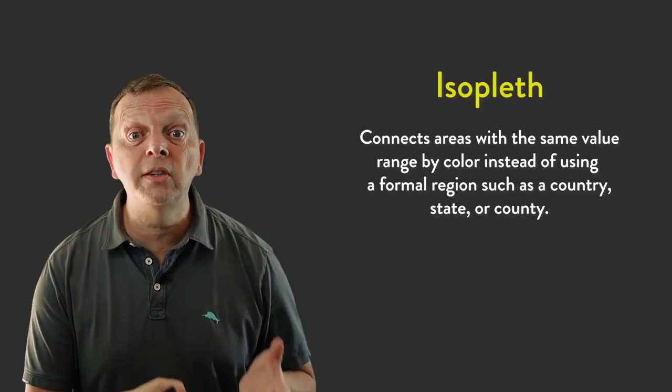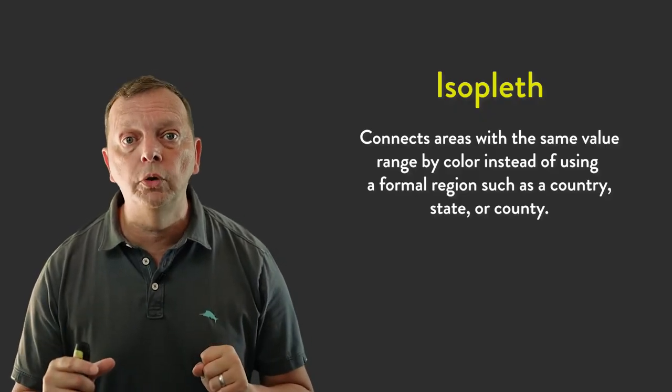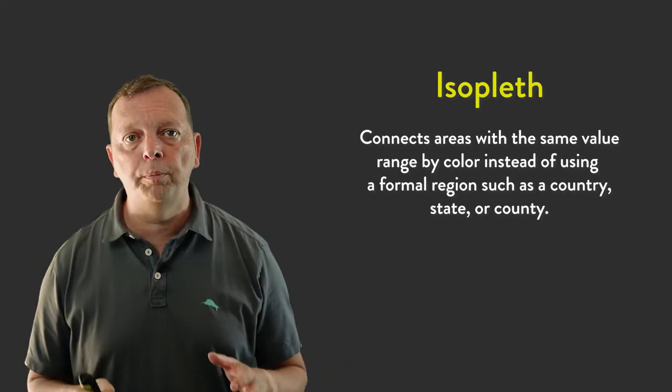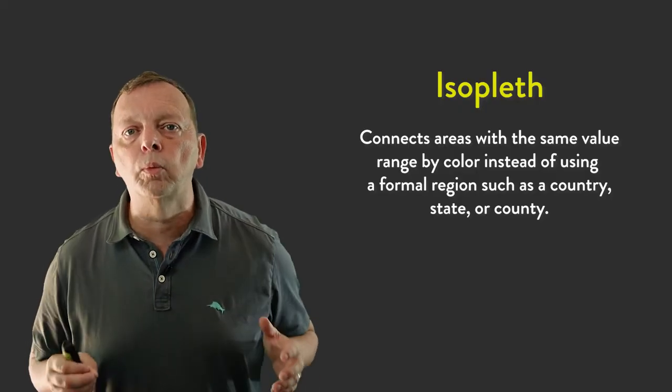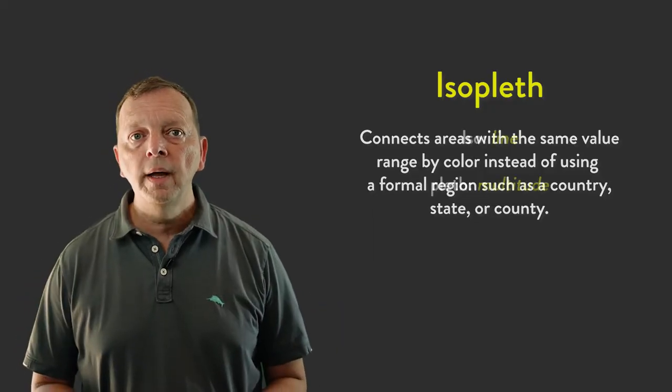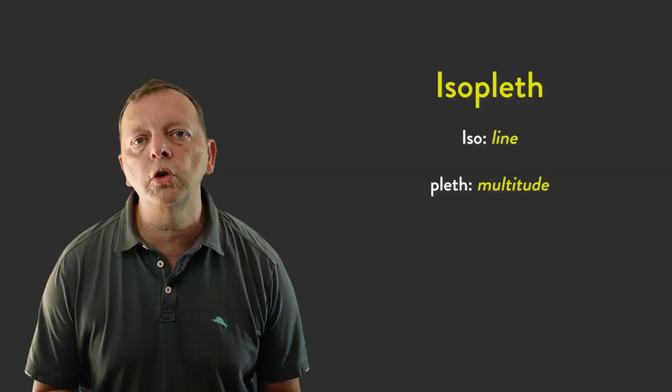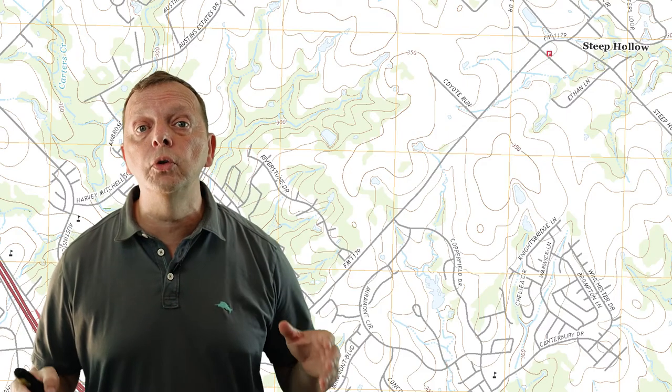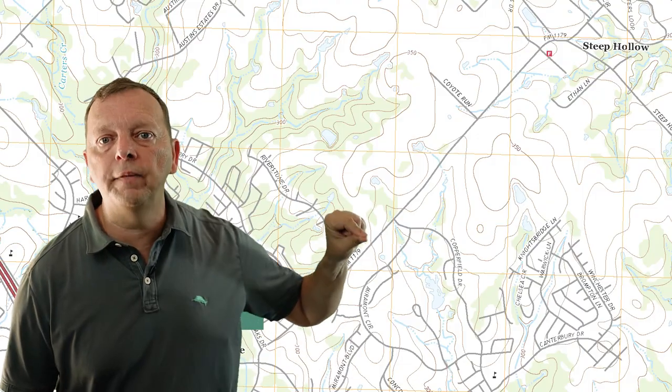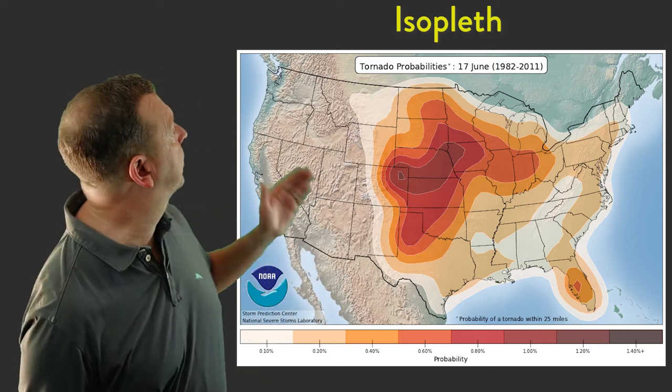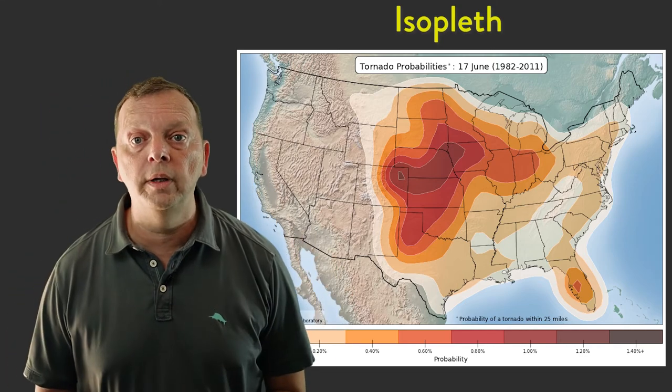But then there are the isopleths. The idea of an isopleth map is really the same as a choropleth map. It's going to use color to represent the numerical value of a particular characteristic spatially. But unlike a choropleth map, it does not use pre-existing formal regions to display its results. Rather, it connects areas that have similar values through colors. The word iso actually means line. So it starts with the drawing of lines that all have the same value. Remember our topographic map that uses contour lines to show elevation? This is similar to an isopleth map, as it connects the same elevation by a line. But isopleth maps will use color in between these lines to show a value, such as the percentage of where you're going to find severe storms in the United States.